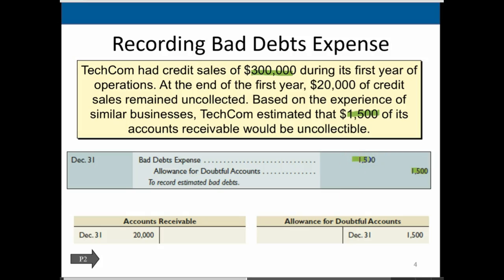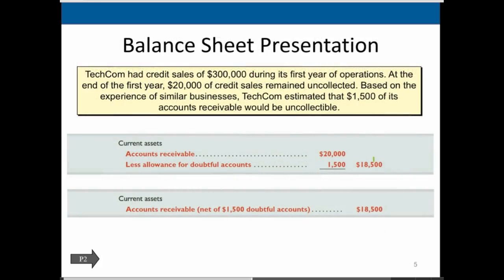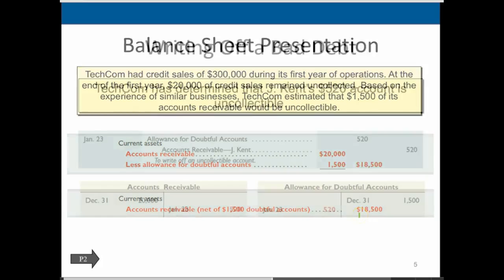This journal entry will reduce net income as of that adjustment — it's an adjusting entry similar to the Chapter 3 adjusting process. On the balance sheet, Techcom had credit sales of $300,000 during the first fiscal year. Looking at current assets, we have our $20,000 receivable less the $1,500 allowance, so the net receivable — the amount we think we'll actually collect — is $18,500.